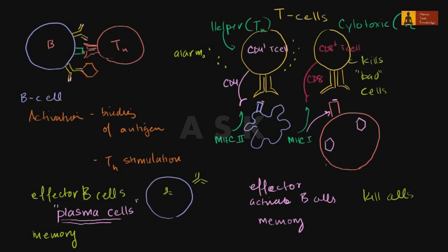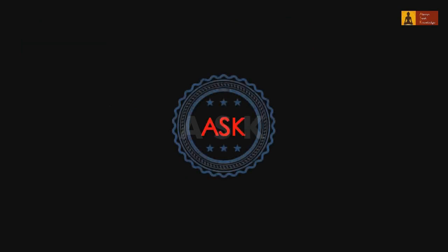Hopefully that clears things up and introduces a bit more terminology. I really want to stress my wife's point: you don't want to say B-cells produce antibodies. It's the effector B-cells — activated B-cells differentiated into effector B-cells — that produce antibodies. In medical school, people will expect to hear plasma cell.